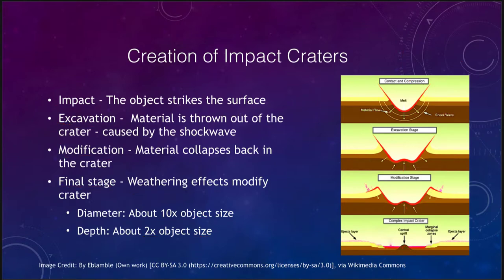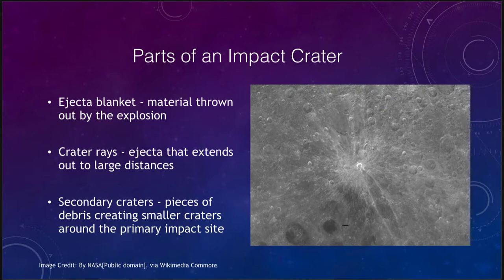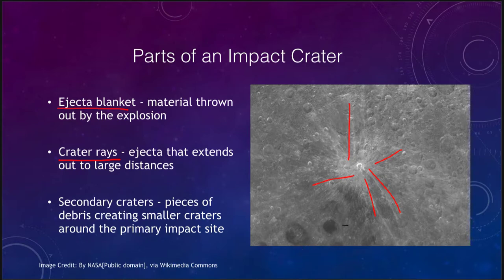Now let's look at some details of an impact crater on the moon. Around the edge we get an ejecta blanket — material thrown out by the explosion. Further out we see crater rays, extending outward from the crater across the surface of the moon. The ejecta blanket is the material right near the crater; the crater rays are material thrown further out. Many of the rocks thrown out will also form secondary craters — smaller craters around the initial crater from the debris thrown out in the explosion.